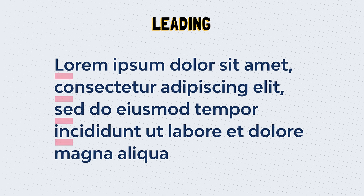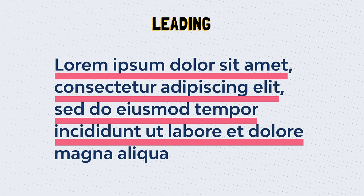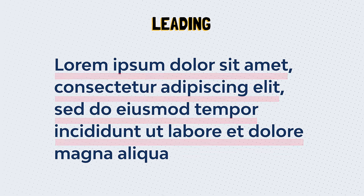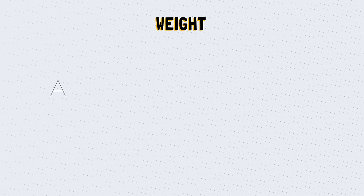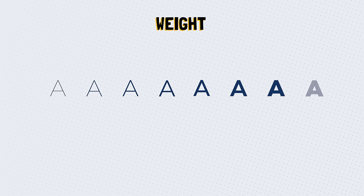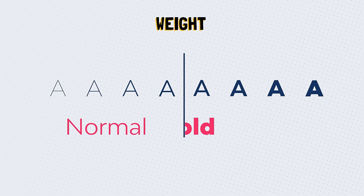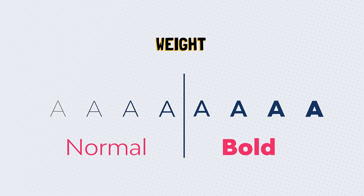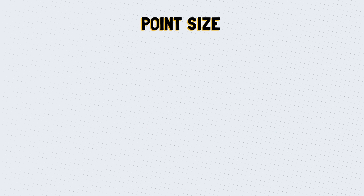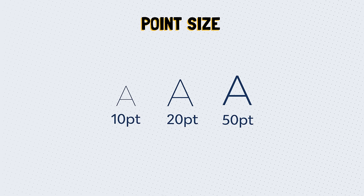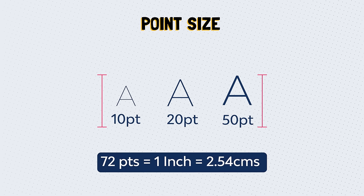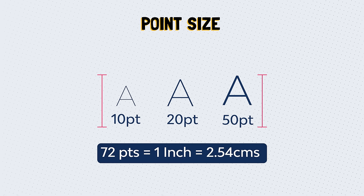Leading in graphic design determines the distance between multiple lines of text. This ensures that the lines aren't touching and that there is enough space to read the lines comfortably. Weight refers to the thickness of a character relative to its height. A typeface may come in many different weights — most usually come with normal and bold. It isn't unusual to see fonts with anywhere from four to a dozen weights. A font is measured in point size, which dictates the height of the character. There are 72 points in one inch or 2.54 centimeters.